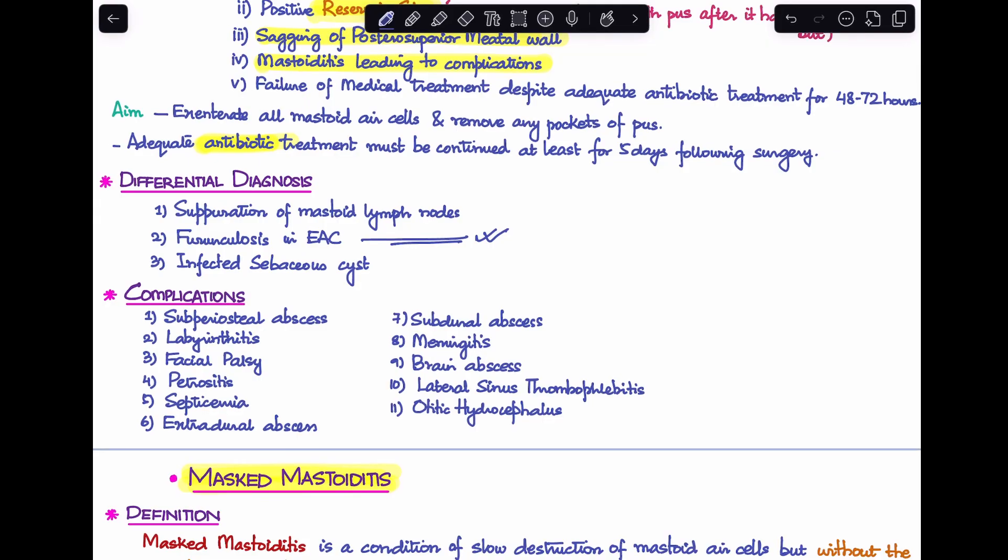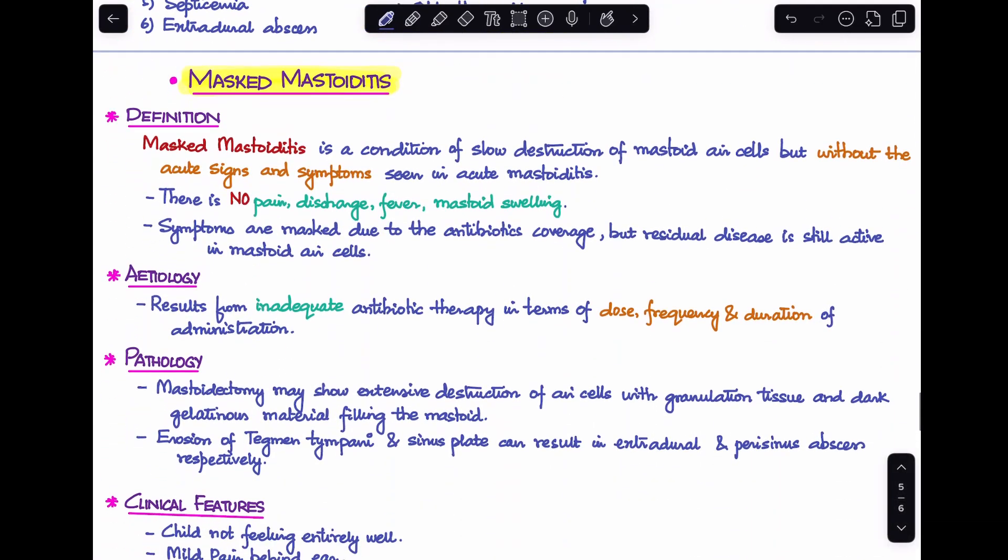Next, let's talk about the second type of mastoiditis, masked or latent mastoiditis. What is masked mastoiditis? This is a condition of slow destruction of mastoid air cells but without the acute signs and symptoms. There will be no pain, no discharge, no fever, no mastoid swelling. The symptoms appear masked because of antibiotic coverage, but residual disease is still active in mastoid air cells. The cause is inadequate antibiotic therapy in terms of dose, frequency, and duration.